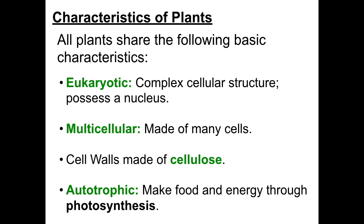Plants are comprised of eukaryotic cells, meaning that they have a complex cellular structure and their DNA is contained within a nucleus. All plants are multicellular, so organisms like algae are not considered true plants because they are single-celled. There are also bacteria that are photosynthetic, which would make them prokaryotic, so they also would not qualify as plants.